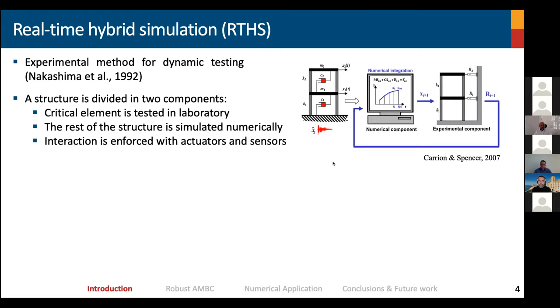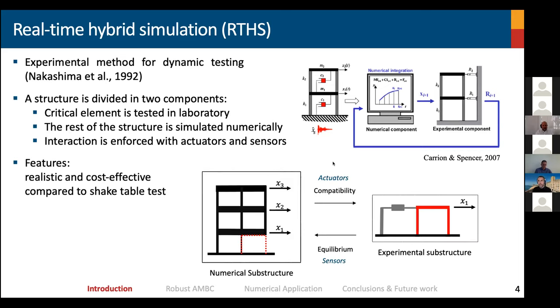This was developed by Professor Nakashima in 1992, where the structure that we want to study is divided into two main components. One is the critical element that we want to test in the laboratory, and the rest of the structure is simulated numerically. The features are that this method is very realistic and cost effective compared to more traditional methods for experimental testing, such as shake table tests. That's the reason why we're interested in continuing developing this method.